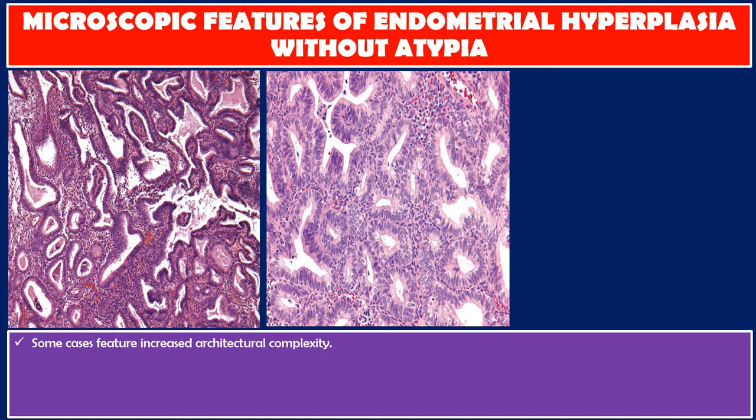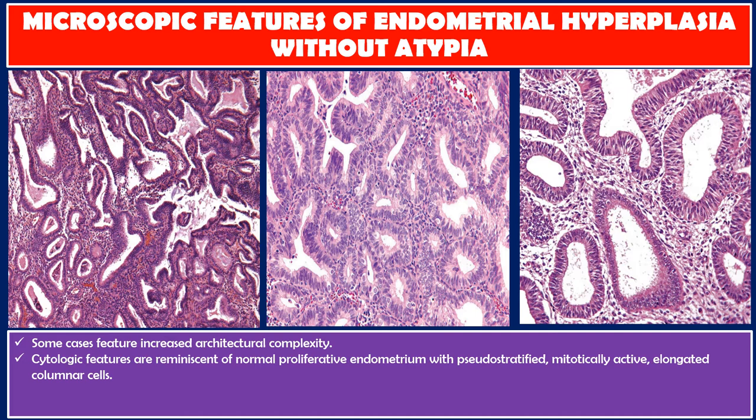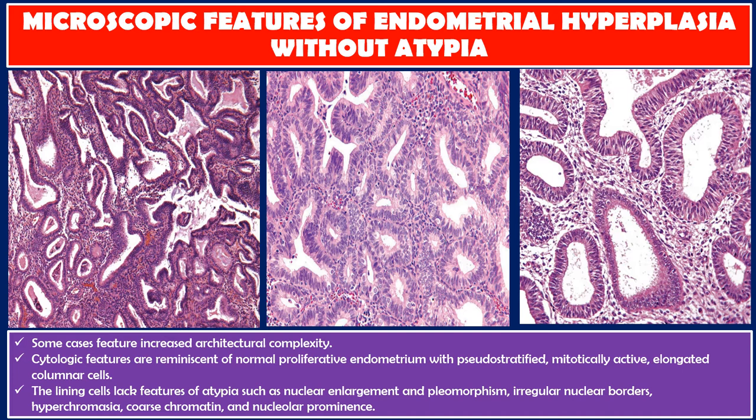Cytologic features are reminiscent of normal proliferative endometrium, with pseudostratified, mitotically active, elongated columnar cells. The lining cells lack features of atypia such as nuclear enlargement and pleomorphism, irregular nuclear border, hyperchromasia, coarse chromatin, and nucleolar prominence.